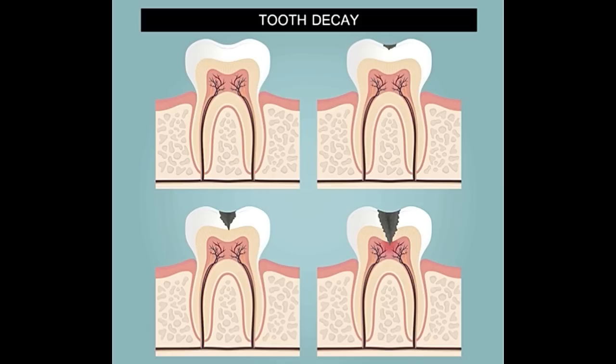Periodontal ligament: The term periodontium refers to the tissues that surround and anchor the teeth. It comprises the gingiva, alveolar mucosa, cementum, periodontal ligament, and the alveolar bone that forms the sockets for the teeth. Made from bundles of connective tissue fibers, the periodontal membrane or ligament is a connective tissue located between the tooth and the alveolar socket. The fibers are attached to the cementum that covers the root of the teeth, as well as the alveolar bone and the cervical gingiva. It anchors the teeth within the jaw and also helps the tooth withstand the mechanical stresses involved in biting and chewing.